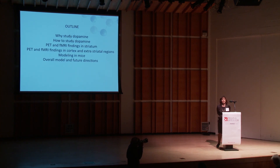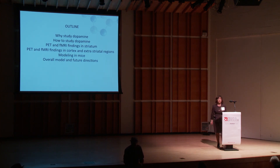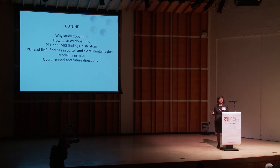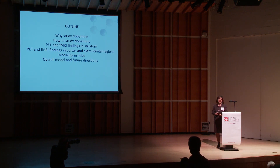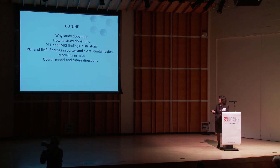I'm going to tell you about the work we've done using imaging to study dopamine transmission and schizophrenia — why and how we do it, the findings we've had, and what we've learned from work in mice by our collaborators about the impact of abnormal dopamine on the brain, and give you some of our future directions.